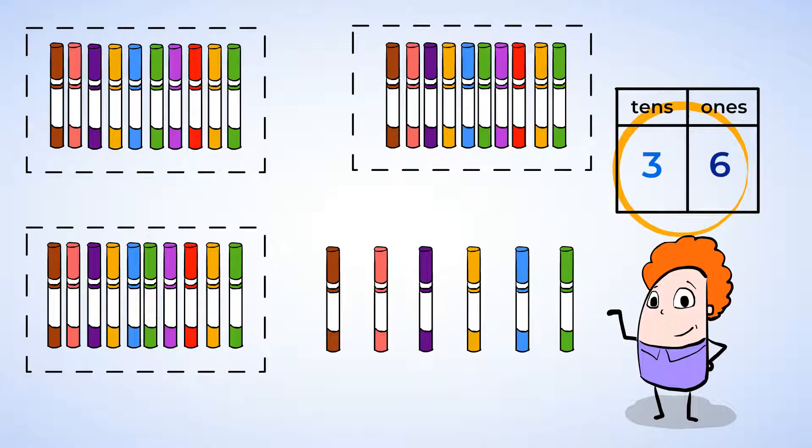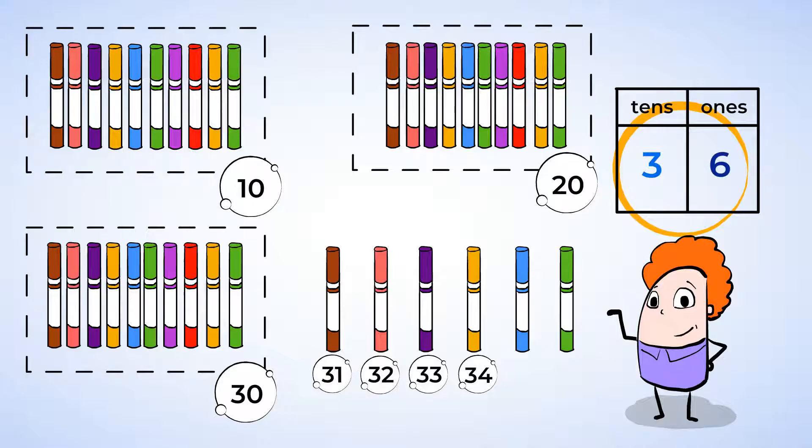But just to be sure, we can check this by counting. First, count the 10s. Because each group has 10 markers, we should count by 10s. 10, 20, 30. And now we count by 1s. 31, 32, 33, 34, 35, and 36. You have 36 markers.